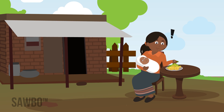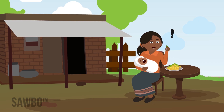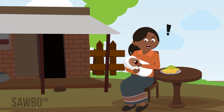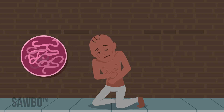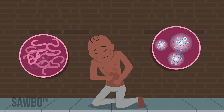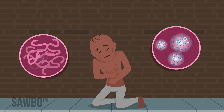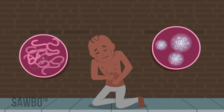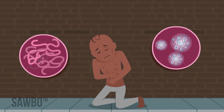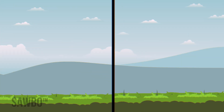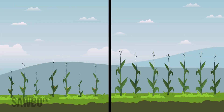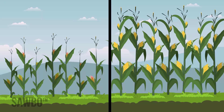If a breastfeeding mother eats aflatoxin-contaminated food, the baby's health can also be affected. Mycotoxin exposure can increase the chances of individuals to suffer from diseases caused by other microorganisms, and it can worsen the effects of malnutrition.